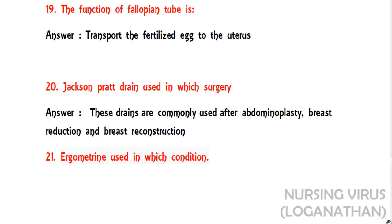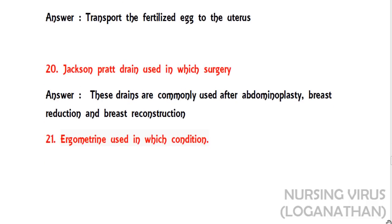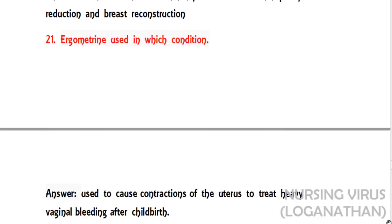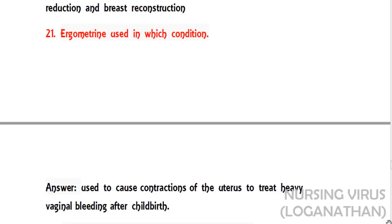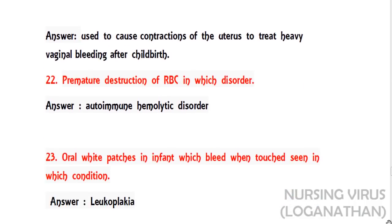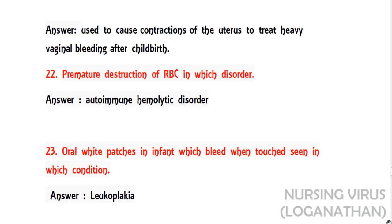Jackson-Pratt drains are commonly used after abdominoplasty, breast reduction, and breast reconstruction surgeries. The twenty-first question: ergometrine is used in which condition? Ergometrine causes contraction of the uterus to treat heavy vaginal bleeding after childbirth.